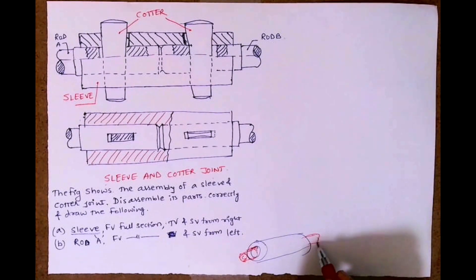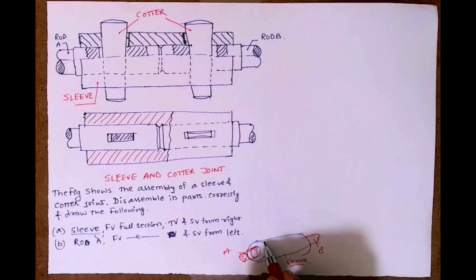And over here we have rod B, and this is the sleeve. Then we have cotter over here. This is a rough 3D diagram so you'll have an idea of how it is appearing.